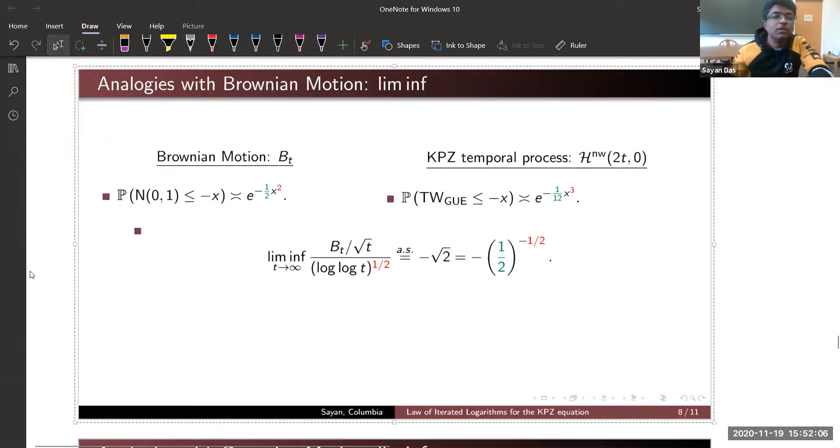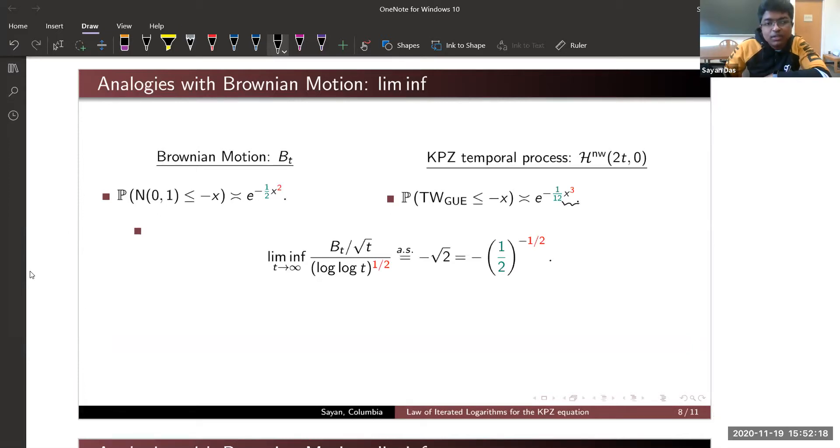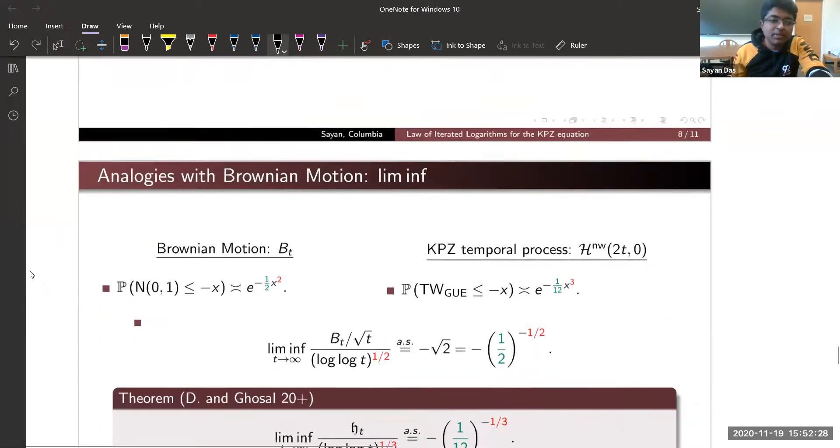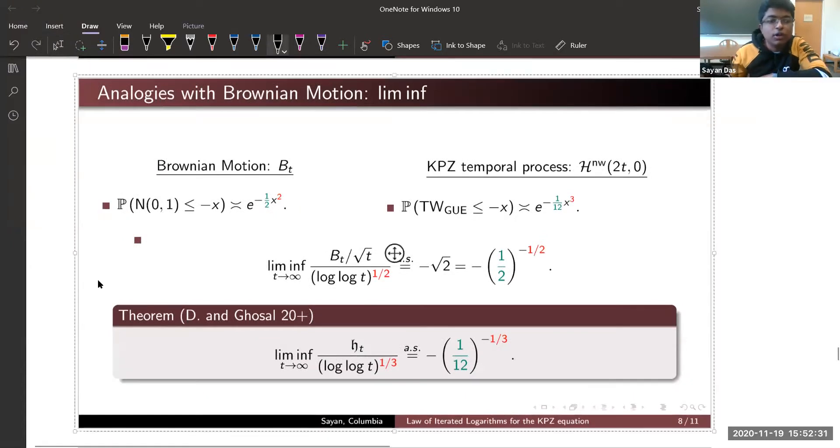This is how the lim sup behaves. We can also talk about the lim inf. In case of Brownian motion, since Gaussian distribution is symmetric we get the same thing. However, for the Tracy-Widem distribution it is highly asymmetric—the exponent is actually cubic. It is much more unlikely to go downwards. The lim inf has the rate of log log t to the power 1/3, and again the exact constant is dictated by the tails. The lim inf has a much lower growth compared to the lim sup, and that's why we have the asymmetry as seen by the simulations.